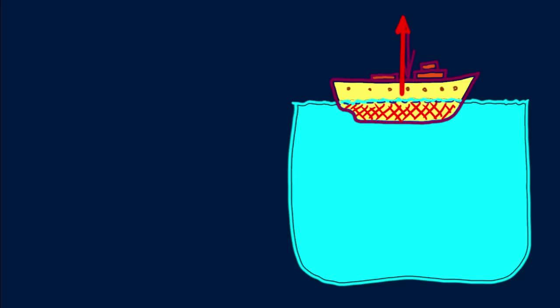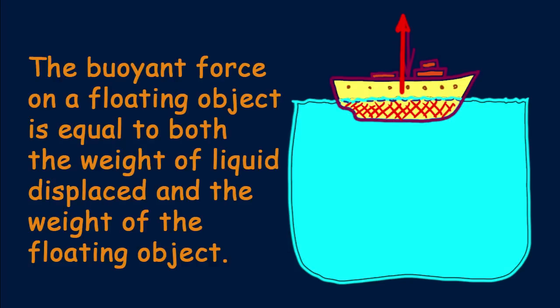Which leads us to a corollary to Archimedes principle for floating objects. That's that the buoyant force on a floating object is equal to both the weight of the liquid displaced and the weight of the floating object. Buoyant force matches a floating object's weight, otherwise the object wouldn't float.